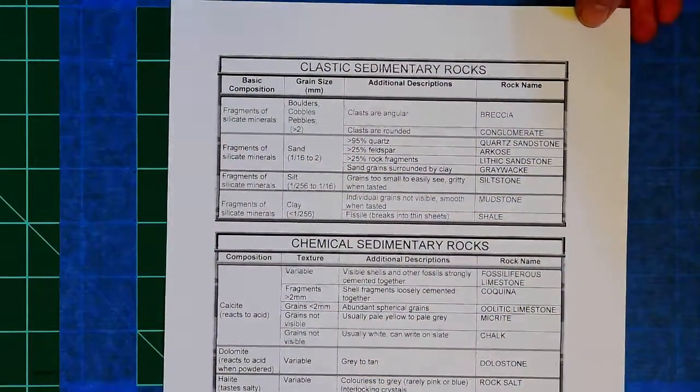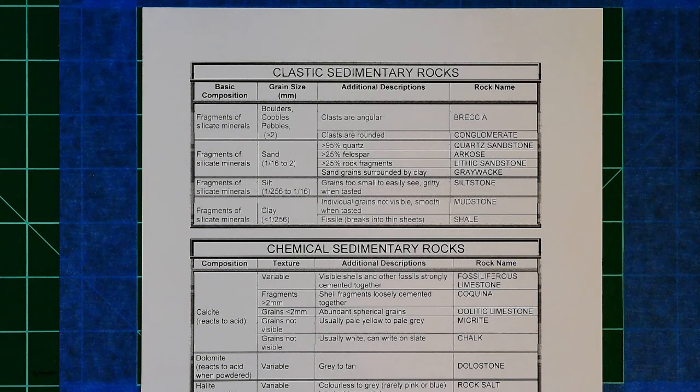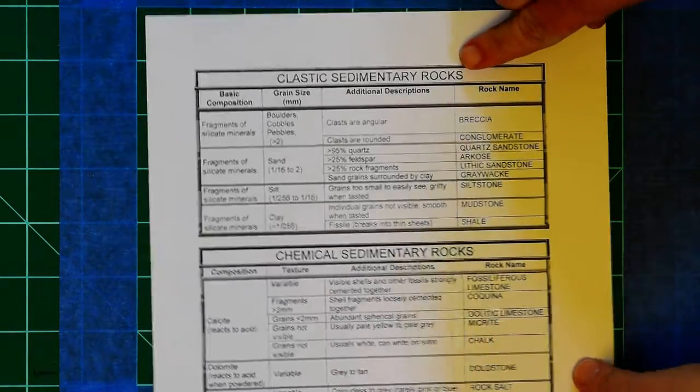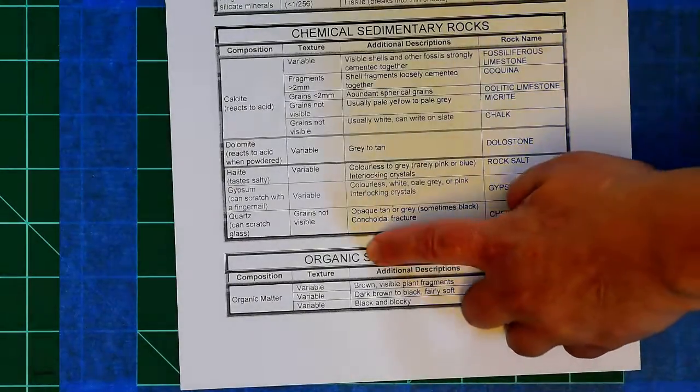But the important part that you probably care about is how are we going to classify the different ones that you see in your lab? Well, the first thing you have to ask yourself is: are they clastic, are they chemical, or are they organic?